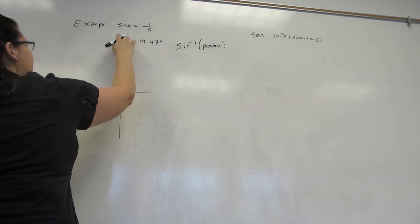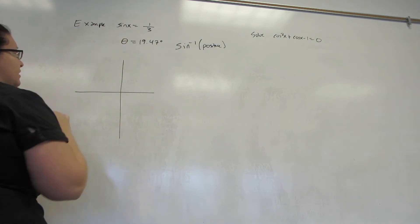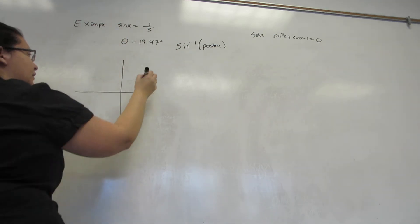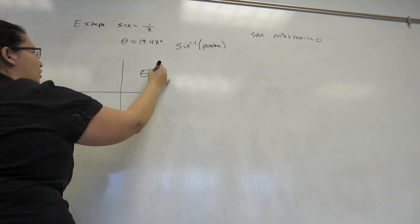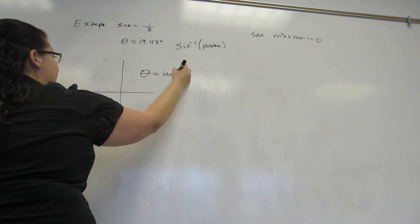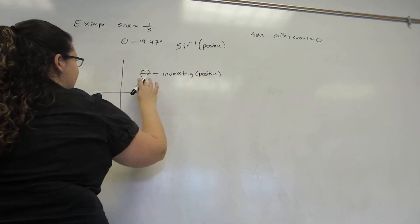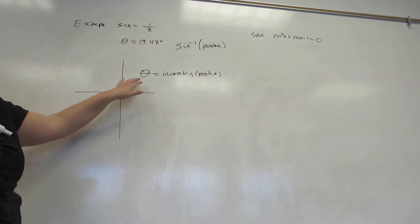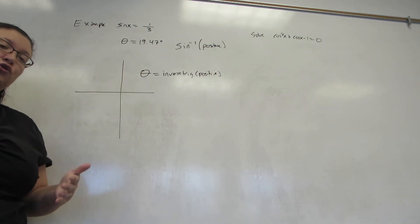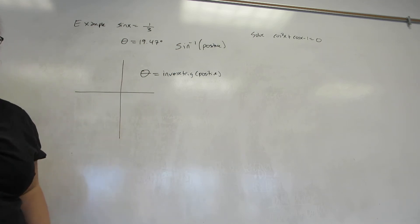Now, I'm going to modify this. I'm going to call this theta, because it's not exactly the answer yet. If you always do inverse trig of the positive version, this theta will always be a first quadrant answer, because the inverse trigs of a positive always land in first quadrant.